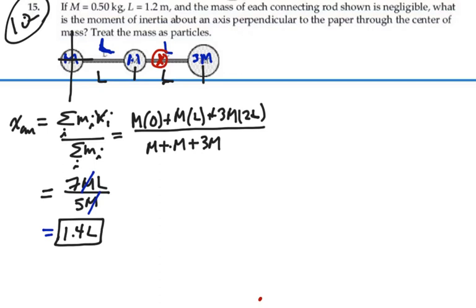So now we're going to move our axis to that point. And if we do that, that means this 3m is going to be 0.6l away, this m just to its left is going to be 0.4l away, and this far m to the left is going to be 1.4l away. In other words, we want the pure distances that all these masses are away from this axis of rotation.